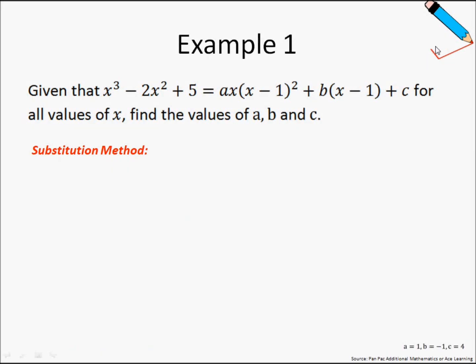Example number 1. Given that x cubed minus 2x squared plus 5 equals ax times (x minus 1) squared plus b times (x minus 1) plus c, for all values of x, find the values of a, b, and c.